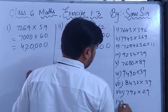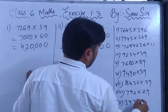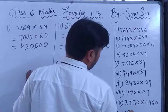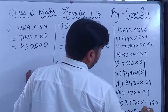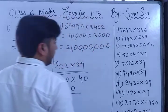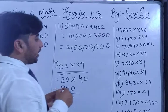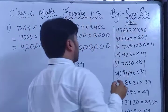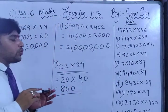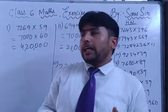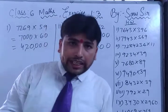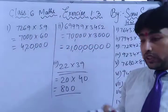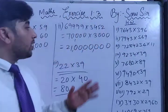The last question is 93430 × 2960. You have to solve all these questions — this is your homework. Write all these questions in your notebook. I hope all of you have understood how to find the nearest value of tens, hundreds, or thousands — whatever the question is, find the nearest value.